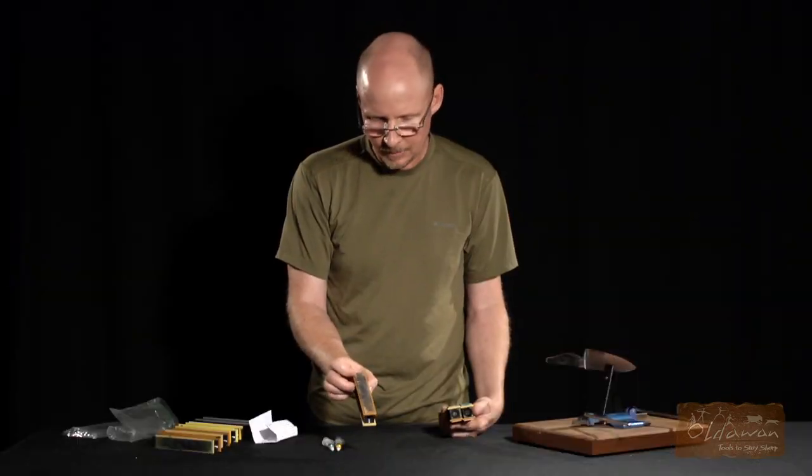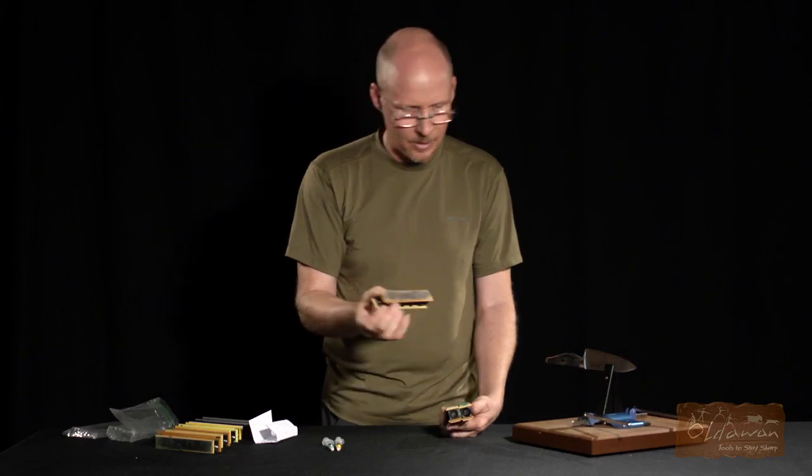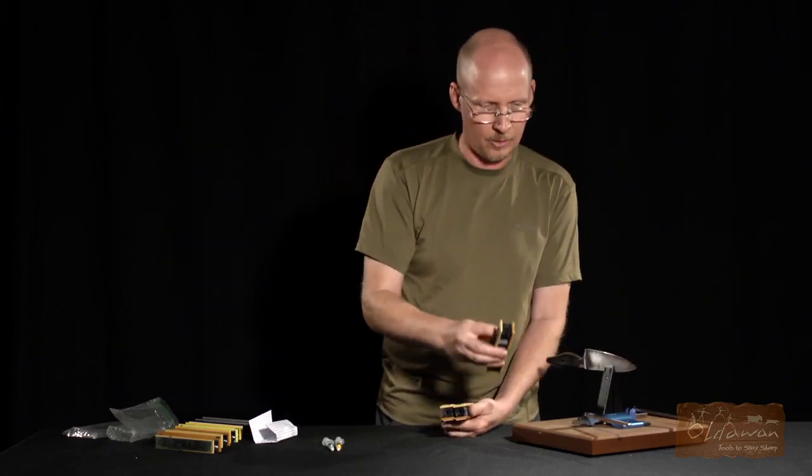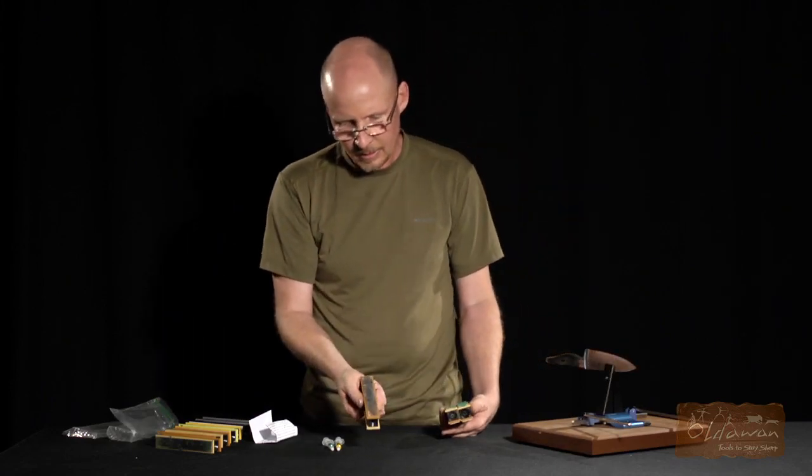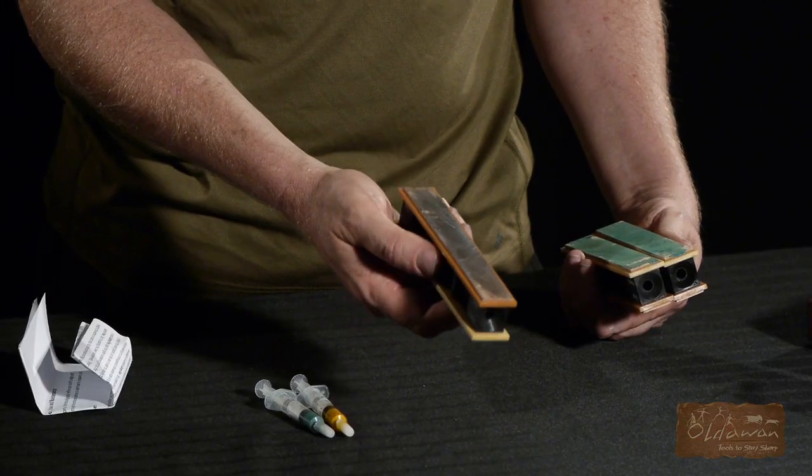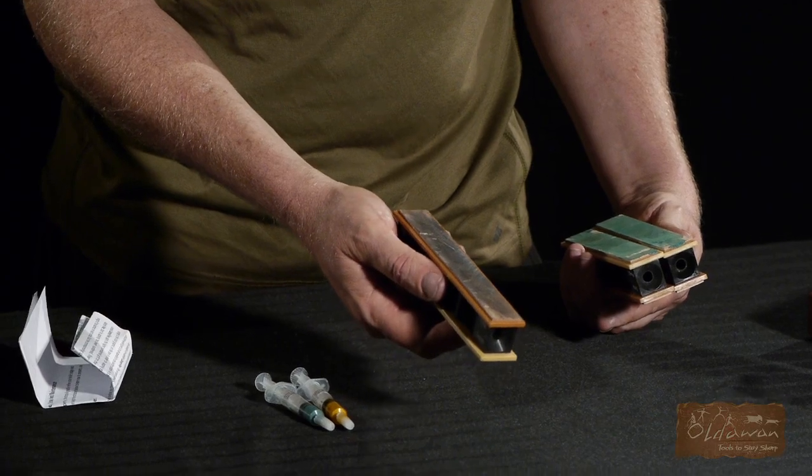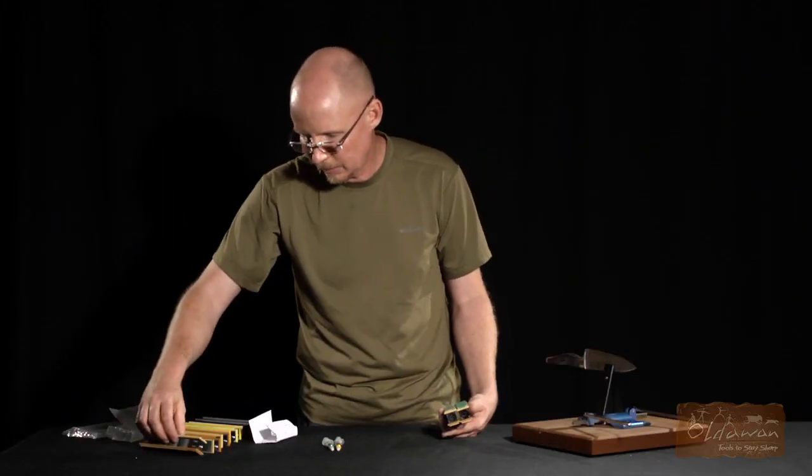The strops are still perfectly usable at this point. You'll find sometimes that they'll get a little bumpy going over the knife edge, in which case I just take them off the rod, flip them over and go the opposite way, and that'll usually smooth that right back out. As long as you haven't taken a big chunk out of them, it's not a problem at all having some nicks and cuts in the surface of the stropping material.